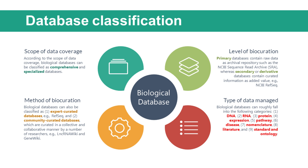Considering the heterogeneity in data type, scope, and curation, biological databases can be classified into multiple categories. According to the scope of data coverage, they can be classified as comprehensive and specialized databases. Comprehensive databases cover different types of data from numerous species; typical examples are GenBank, the European Molecular Biology Laboratory (EMBL), and the DNA Data Bank of Japan (DDBJ). These three databases were established as the International Nucleotide Sequence Database Collaboration in 1988 to collect and disseminate DNA and RNA sequences.